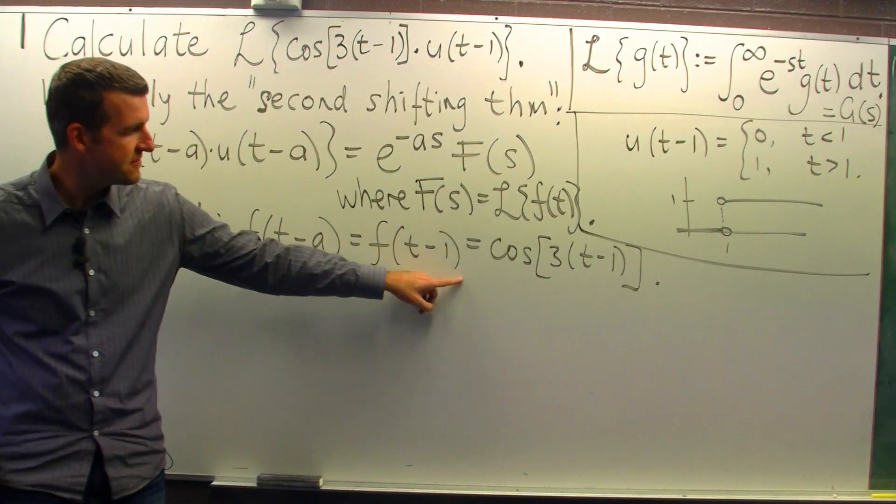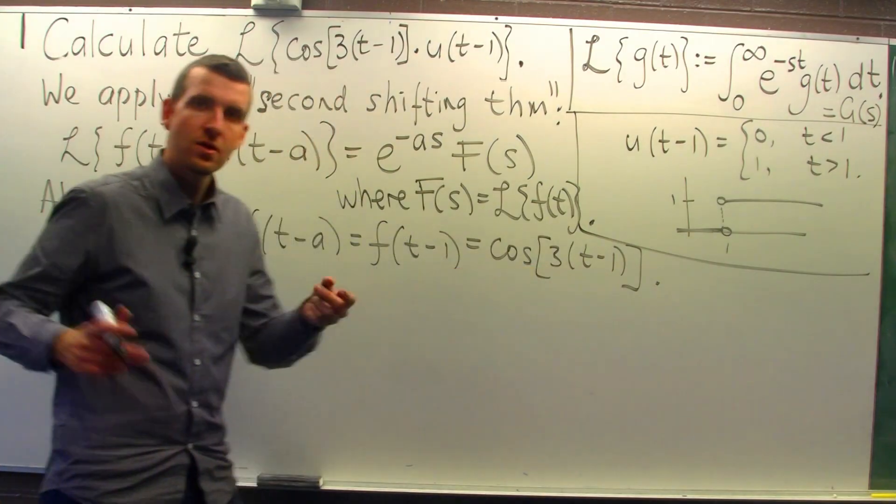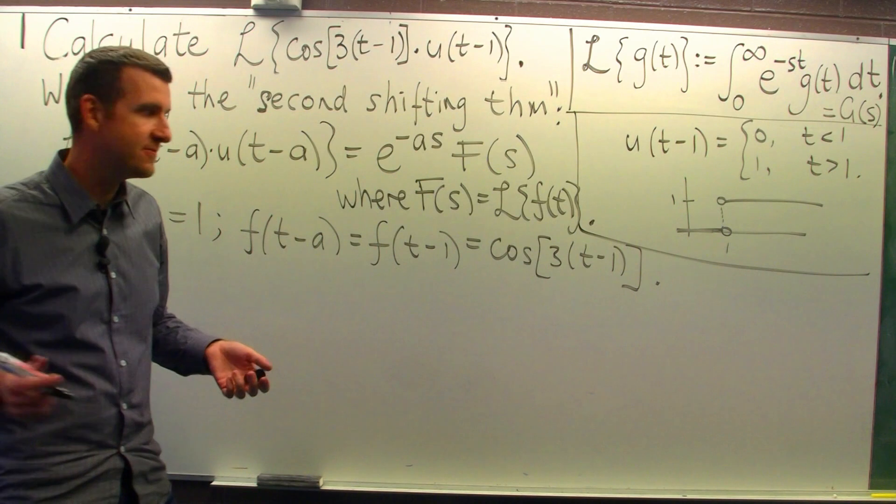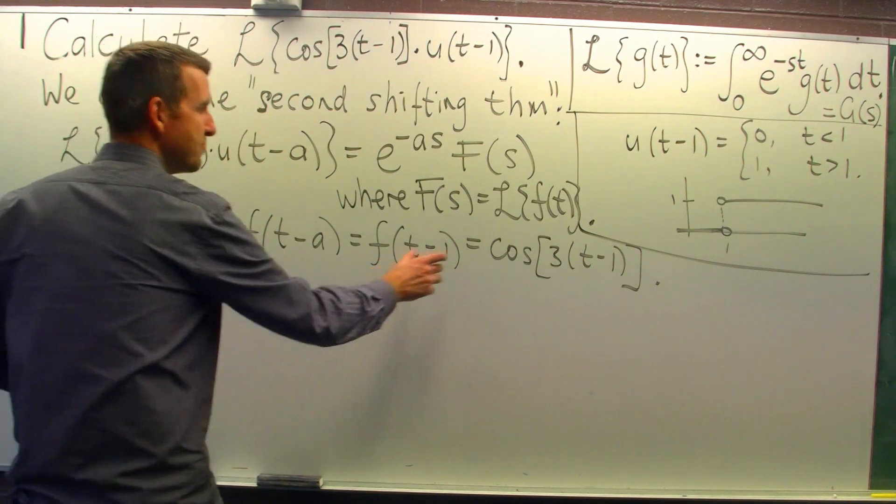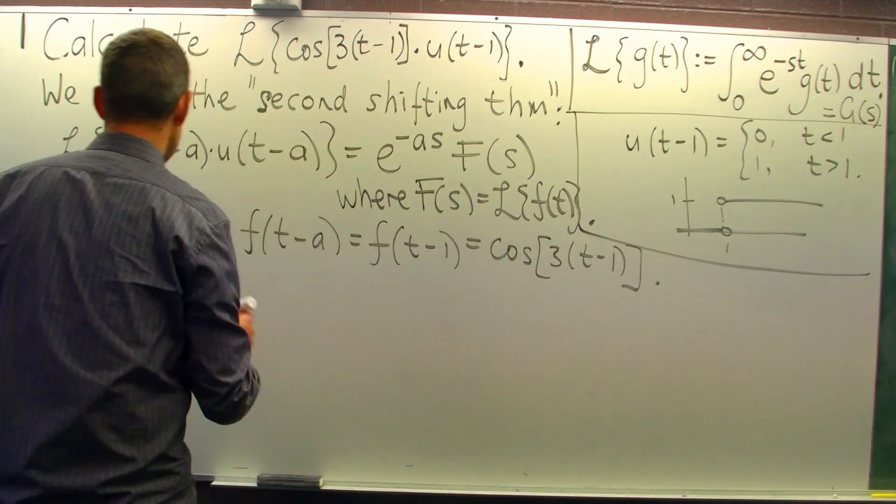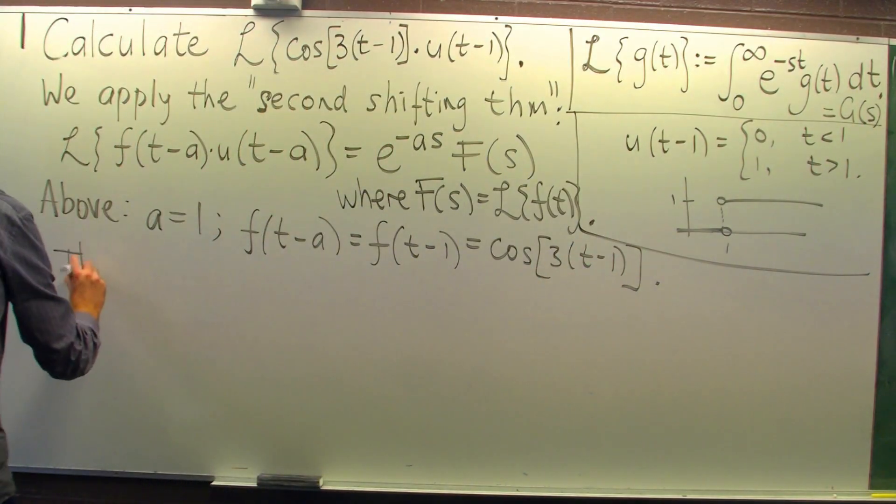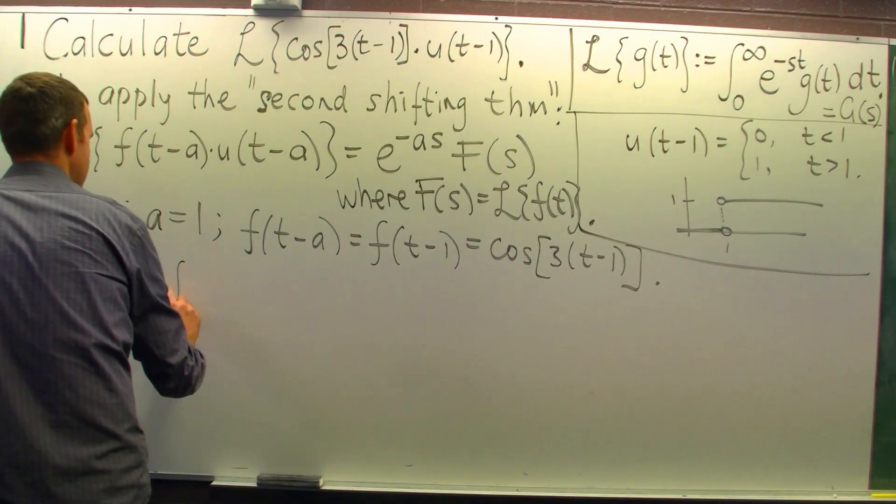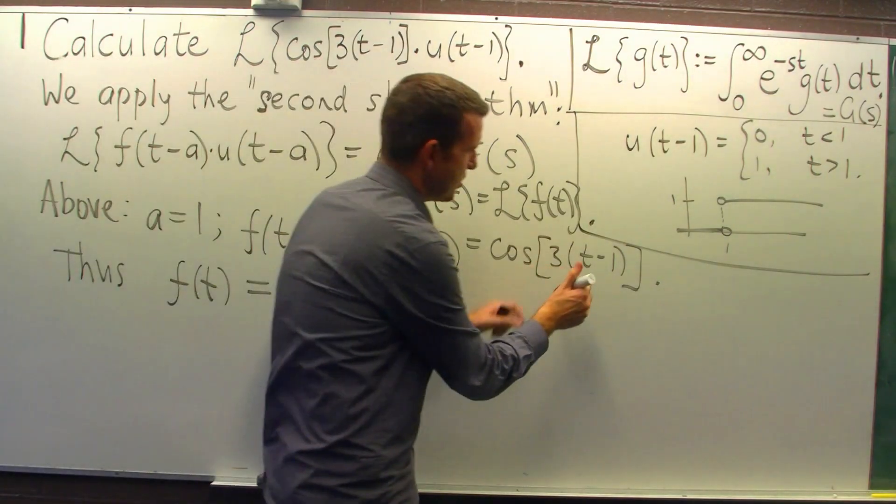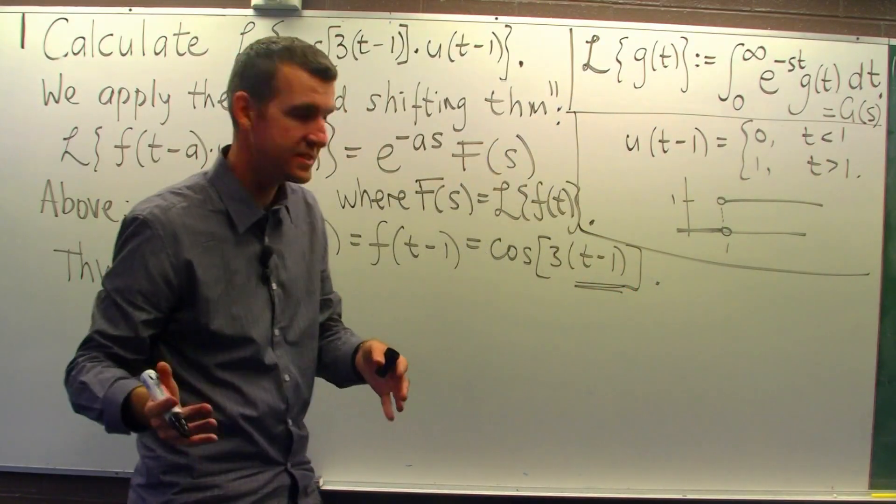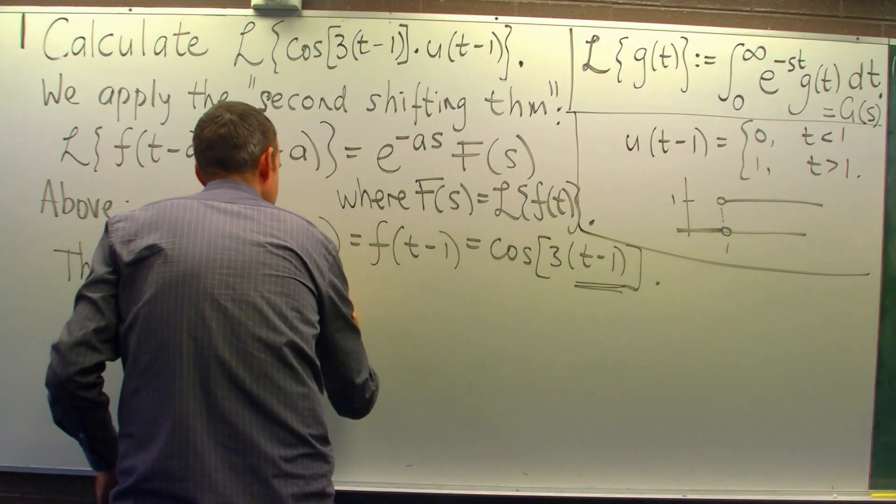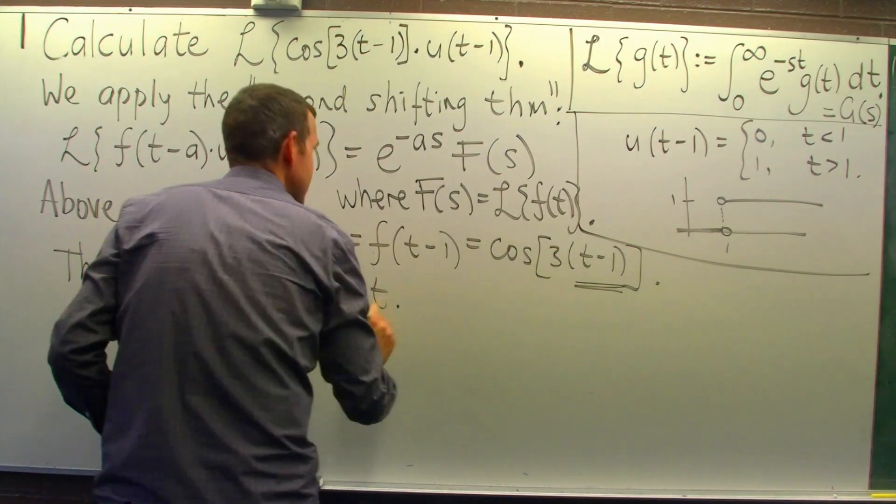Alright, so if f of t minus one is this, what's little f of t? Well, we replace t minus one in brackets with just t. So if we replace this whole bracket here with just t, I get cos of three t.